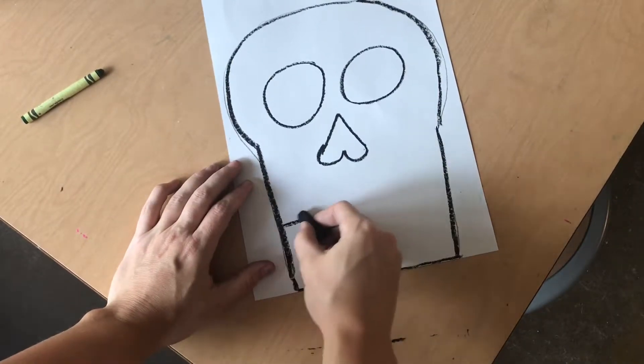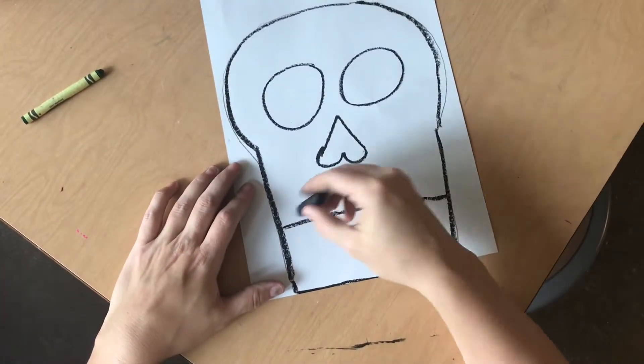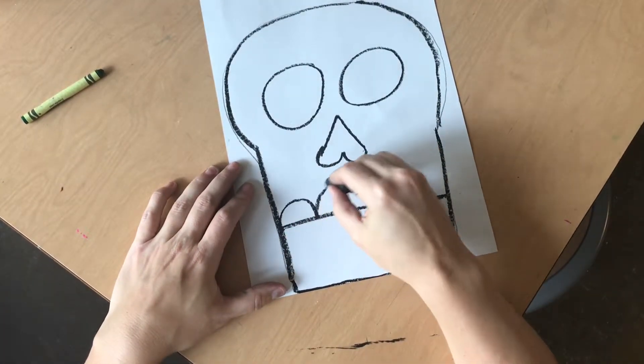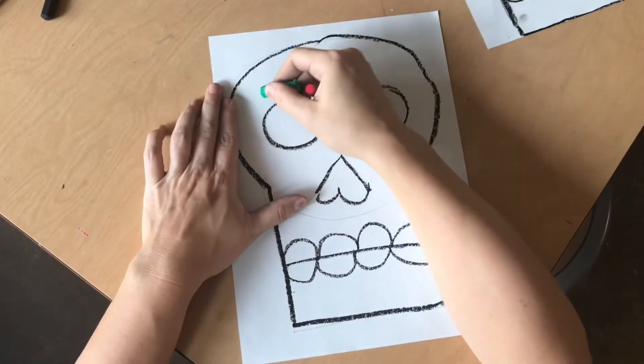Now the rest is easy. Do a mouth across the bottom. This is the jaw area down here. It's not a neck, it's the jaw. And then bumps for the teeth on top and on bottom.